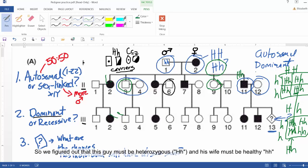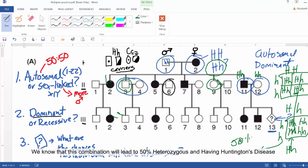So we figured out that this guy is heterozygote and his wife is healthy. So she must be homozygote recessive. And so we just did that cross. So then we know that 50% of their children are going to be heterozygote and have Huntington's disease. And 50% are going to be homozygote and not have Huntington's disease. So this again is an example then of an autosomal dominant pedigree.